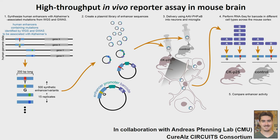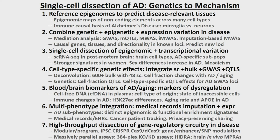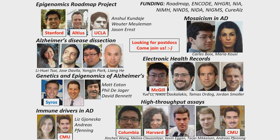In collaboration with my former postdoc Andreas Fennig, now a professor at TMU, we're implanting these multiplexed assays — 10,000 variations at a time — into the brains of mice to understand how these changes manifest in different cell types. To summarize: we build reference epigenomes to dissect disease-relevant tissues and regulators, combine genetic, epigenetic, and expression variation to identify causal genes, apply this at the single-cell level, use blood and brain biomarkers of disease and aging, and integrate information across many phenotypes. We're looking for new postdocs — come to MIT!